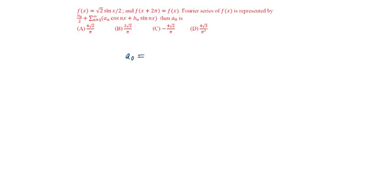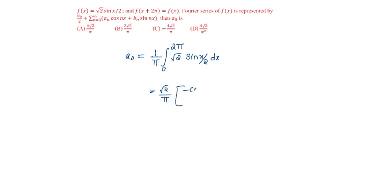A0 will be equal to 1 by pi integral 0 to 2 pi of the function root 2 sin(x/2) dx, which is equal to root 2 by pi. Integration of sin gives minus cos, so we get minus cos(x/2) divided by 1/2, evaluated from 0 to 2 pi. By substituting, this becomes root 2 by pi...